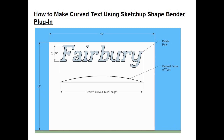It doesn't matter what font you use for this example — I was using the Palida font, but you could use Times New Roman. Notice that I've put in the desired curve that I want the text to follow, and I've also put in the desired curved text length. I want the length of the curved text to be the same as the original, so I drew two lines down, added the curve I wanted, and added a straight line.